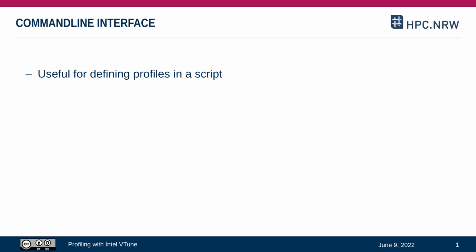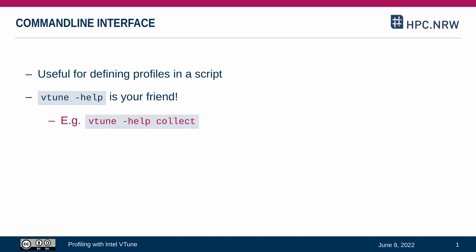First, you should be aware that there is a complete command line interface for vTune. It is very useful if you want to script the creation of multiple profiles. Everything is explained with vtune-help, and you can get subpages for the help documentation by appending commands as well. One example is vtune-help-collect to learn how to start a measurement from the command line.